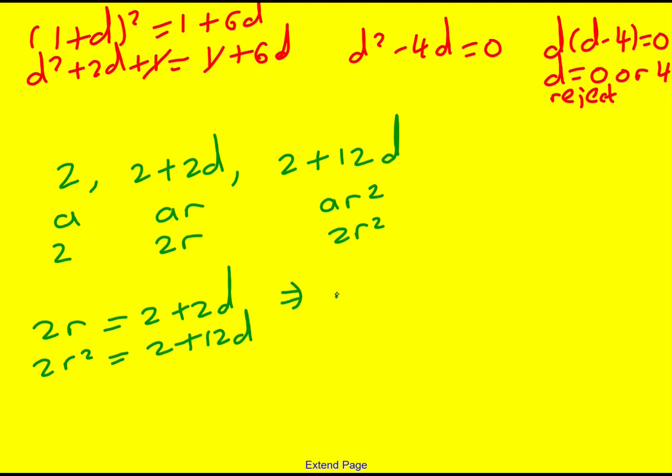So this one implies that r is equal to 1 plus d and then we can substitute that in to here. So 2 times 1 plus d squared will equal 2 plus 12d. We actually get to the same formula I had there because we could actually divide through by 2 to make it 1 plus 6d and then it's exactly the same. It's just a slightly different way of thinking about it.